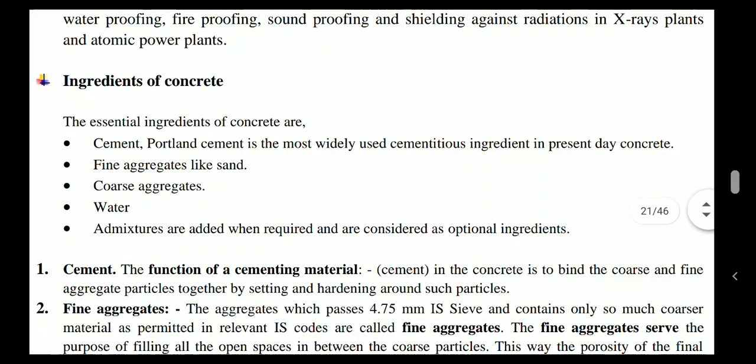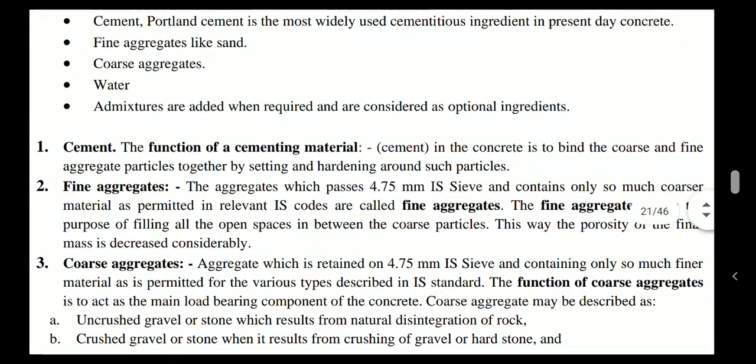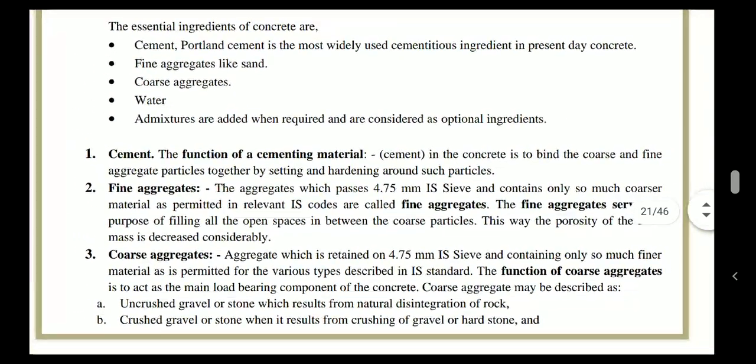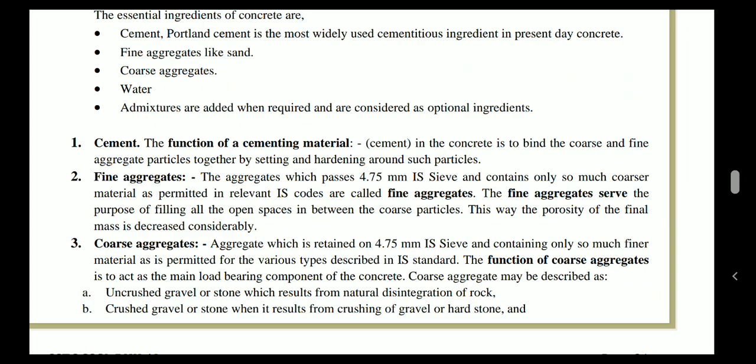The major ingredients of concrete are: first, cement — we have studied types of cement, but mostly we use Portland cement, which is the most widely used cementitious ingredient in present-day concrete work. Second, fine aggregates, that is sand. Third, coarse aggregate, meaning crushed stones or gravels. Fourth, water. Fifth, admixtures if required. Cement is used as a binding material to bind the coarse and fine aggregate particles together by setting and hardening around such particles.